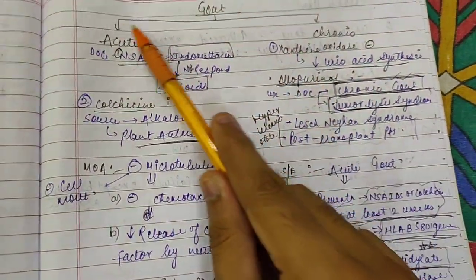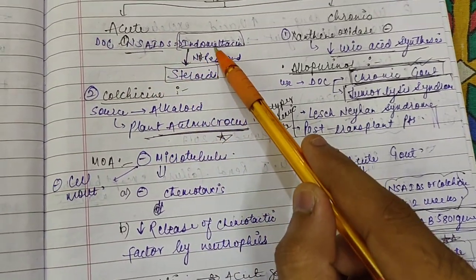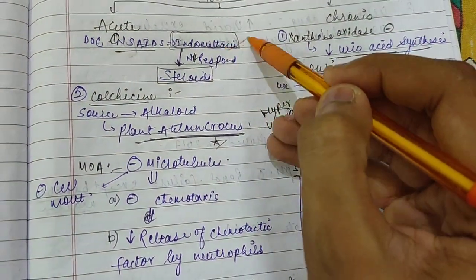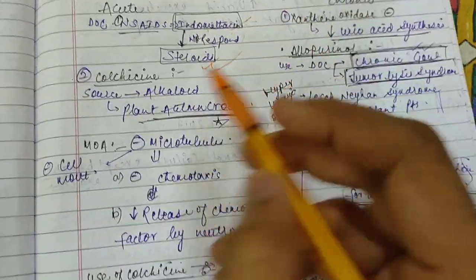First, coming to acute gout treatment, the drug of choice is NSAID. We use basically indomethacin, and if not responding to indomethacin, we can use etoricoxib also.